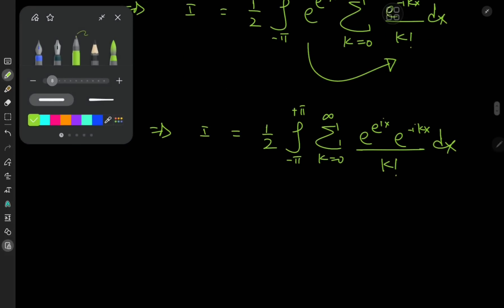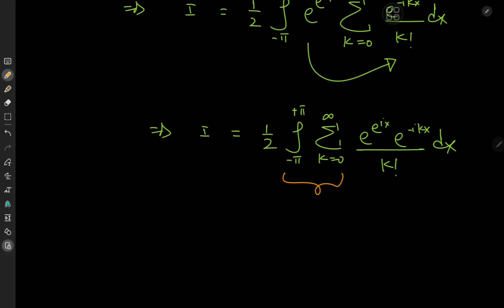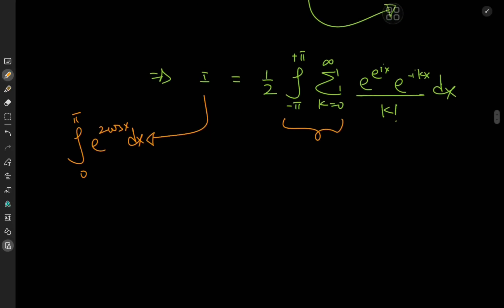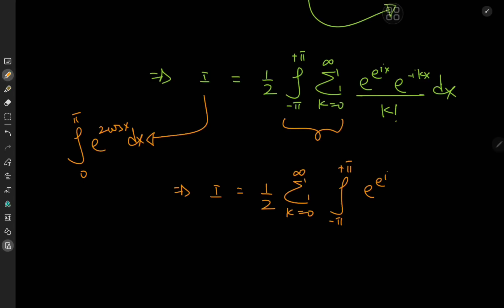The question of whether we can switch the integration and summation operators is pretty trivial, because the target integral I is the integral from zero to pi of e to the two times cosine x dx — we're integrating a bounded function over a bounded interval, so we know it converges. Because the left-hand side converges, the right-hand side converges as well, meaning the switch is completely justified. We can write I as one half the sum over the non-negative integers k of one over k factorial times the integral from negative pi to positive pi of e to the e to the ix times e to the negative ikx dx.